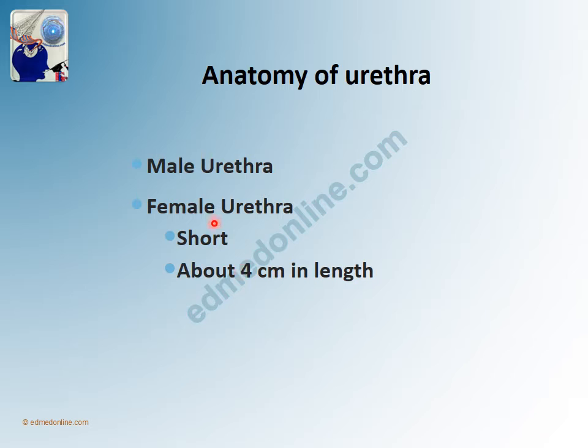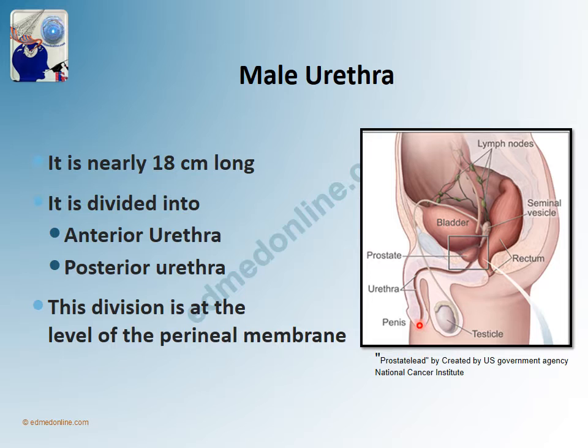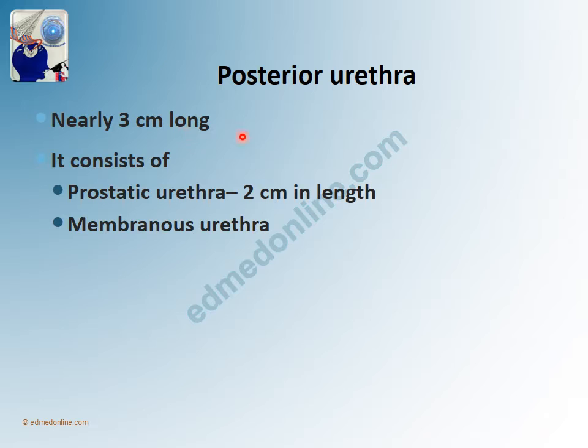The anatomy of the urethra is different in a male and a female. In a female, it is a short urethra about 4 centimeters in length and is less susceptible to trauma. A male urethra extends from the tip of the penis to the opening into the bladder; it is about 18 centimeters long. It is divided into an anterior urethra and a posterior urethra, and this division is at the level of the perineal membrane.